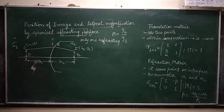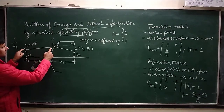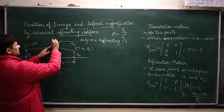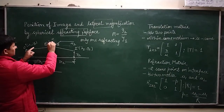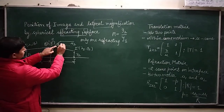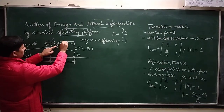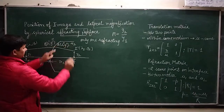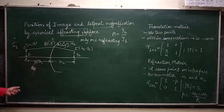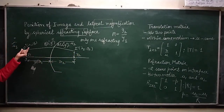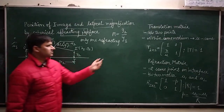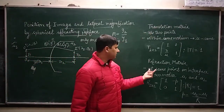So three phenomena are occurring here. From O' to P, there is translation. From P to Q, there is refraction. And from Q to I', there is translation again. To connect the coordinates, we will use the translation matrix and the refraction matrix.